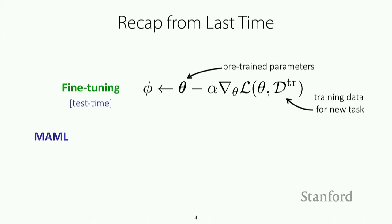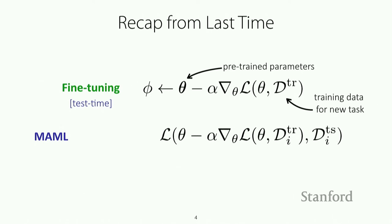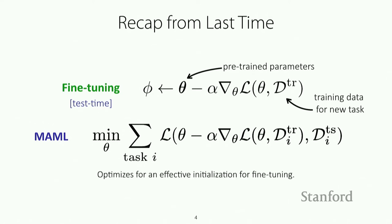We talked about how we might go about the pre-training process in a principled way, especially if we want to fine-tune with very small amounts of data at test time. One way to do that is to embed this fine-tuning procedure into the meta-learning process, evaluating how well the resulting fine-tuned parameters do on held-out data, and then optimizing this objective with respect to a set of pre-trained parameters across a wide range of tasks. This was the model-agnostic meta-learning algorithm that we discussed, which optimizes for an effective initialization for fine-tuning.